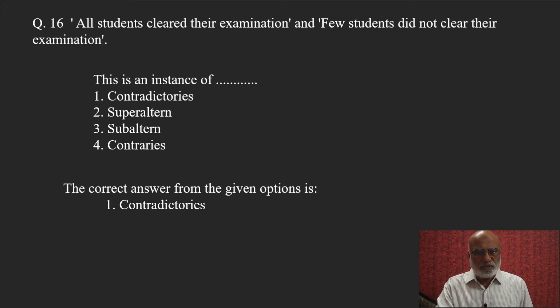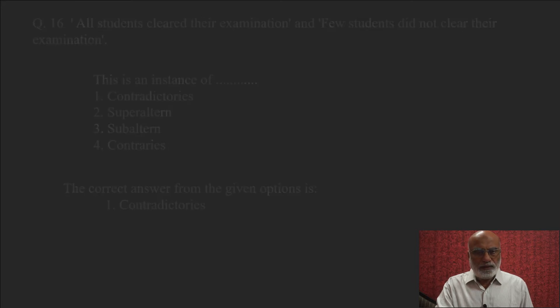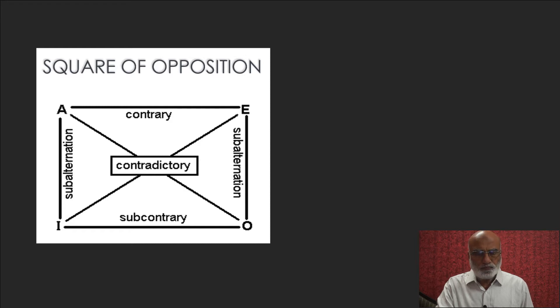The correct answer is contradictories and the explanation comes from square of opposition, where A, E, I, O form the corner of the square and we have contrary, subcontrary, subalternation and contradictory.